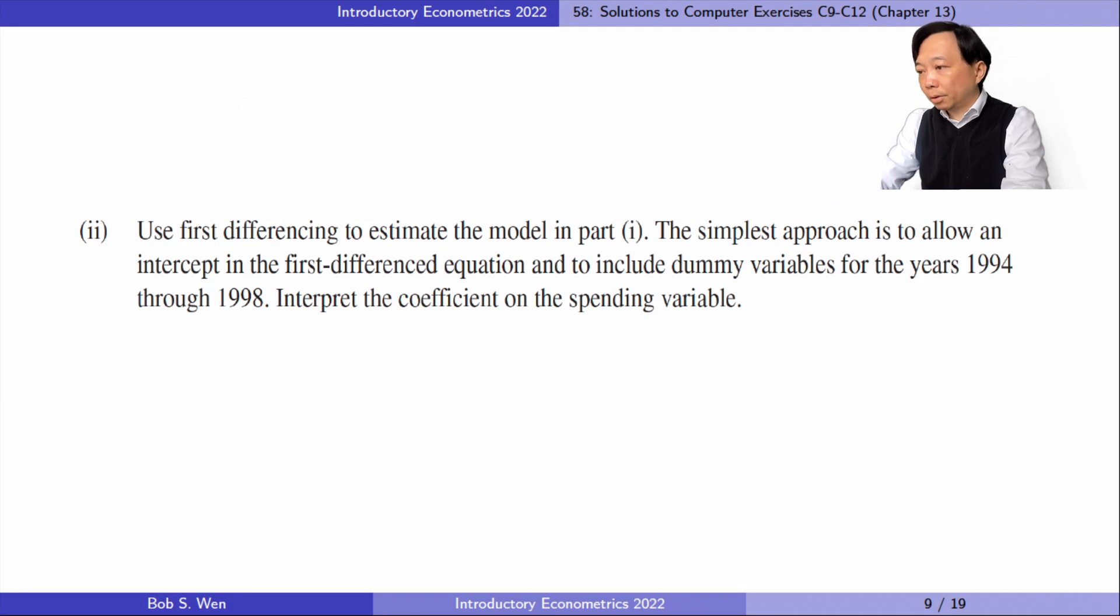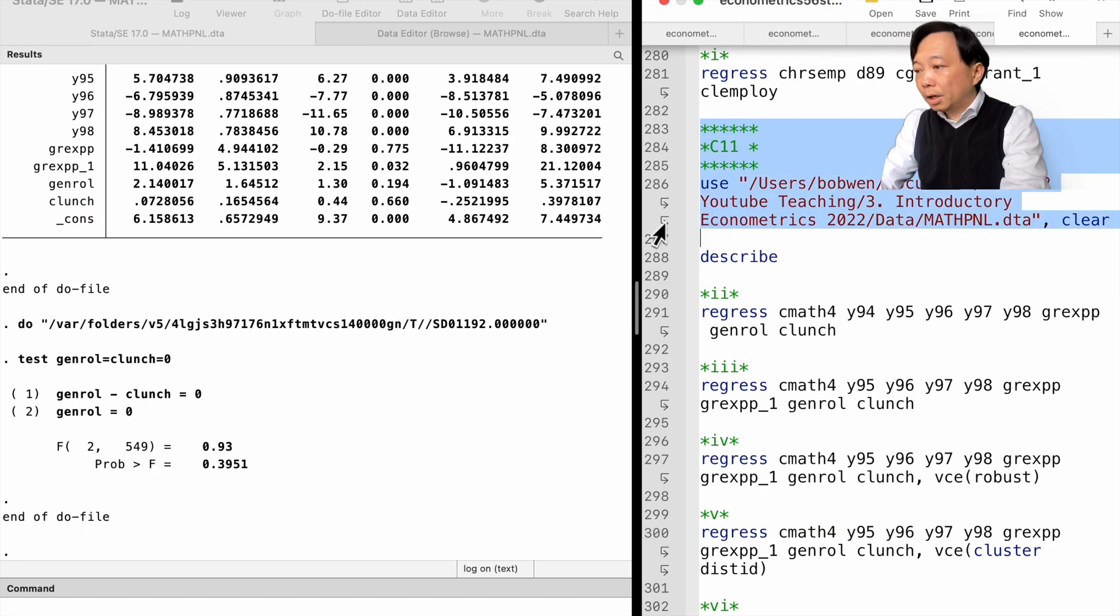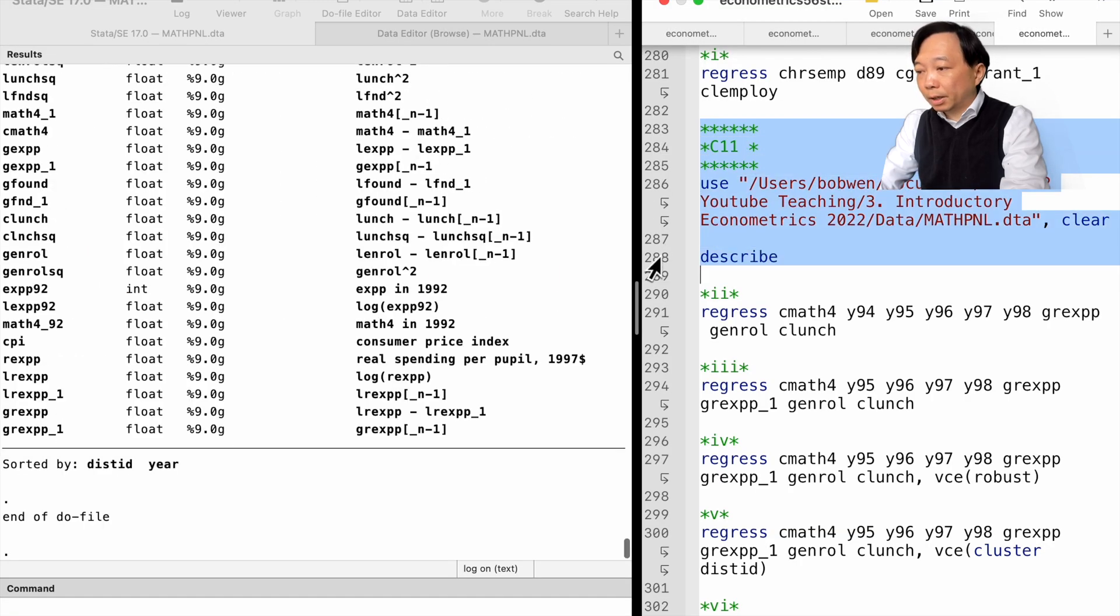In part 2, we use first differencing to estimate the model in part 1. The simplest approach is to allow an intercept in the first differenced equation and include dummy variables for the years 1994 through 1998. Interpret the coefficient on the spending variable.